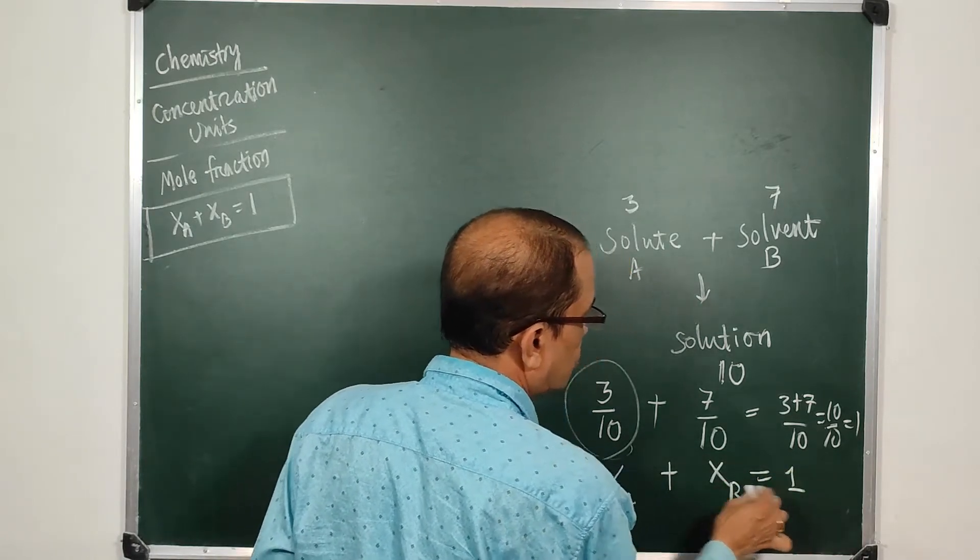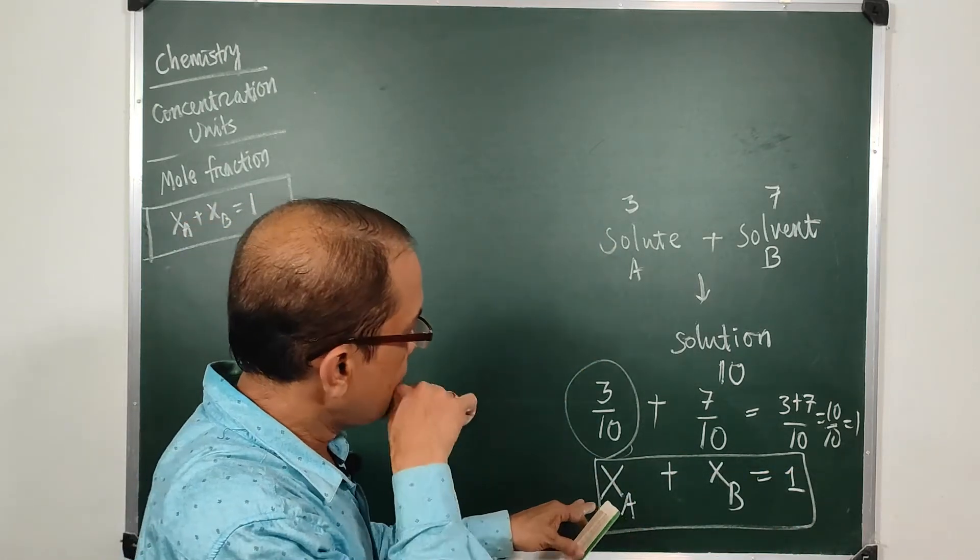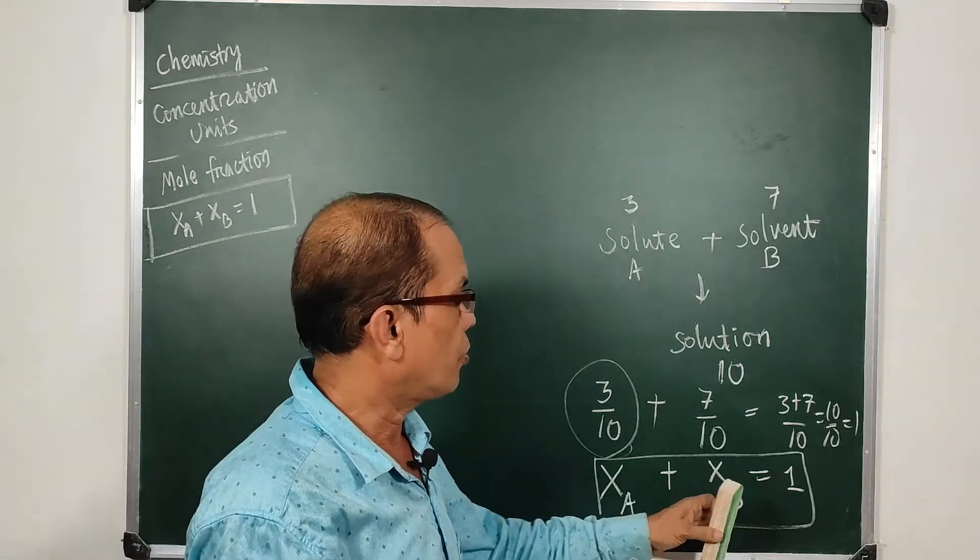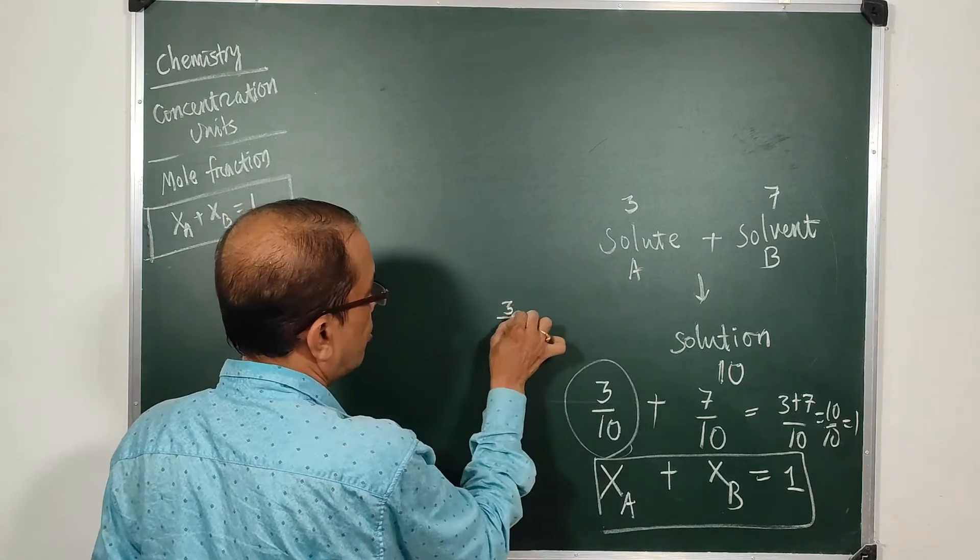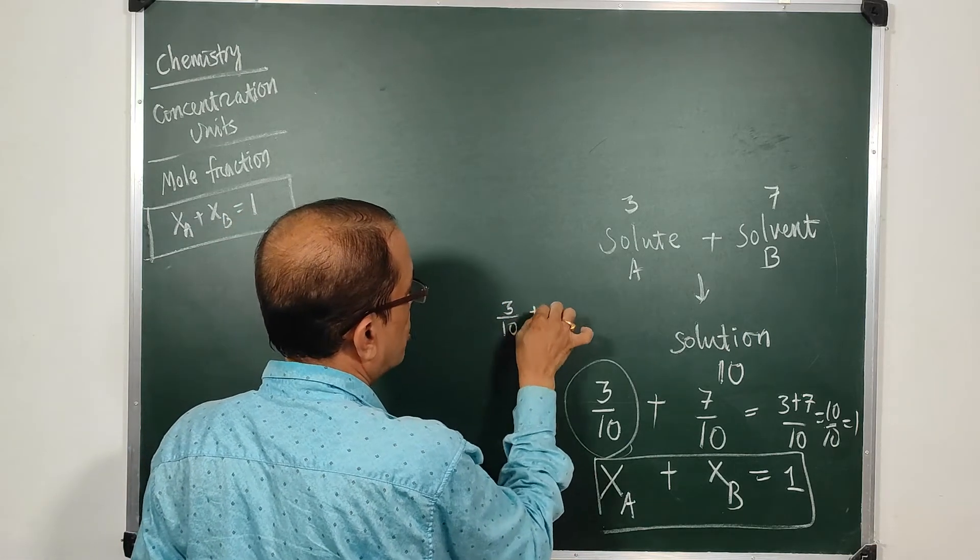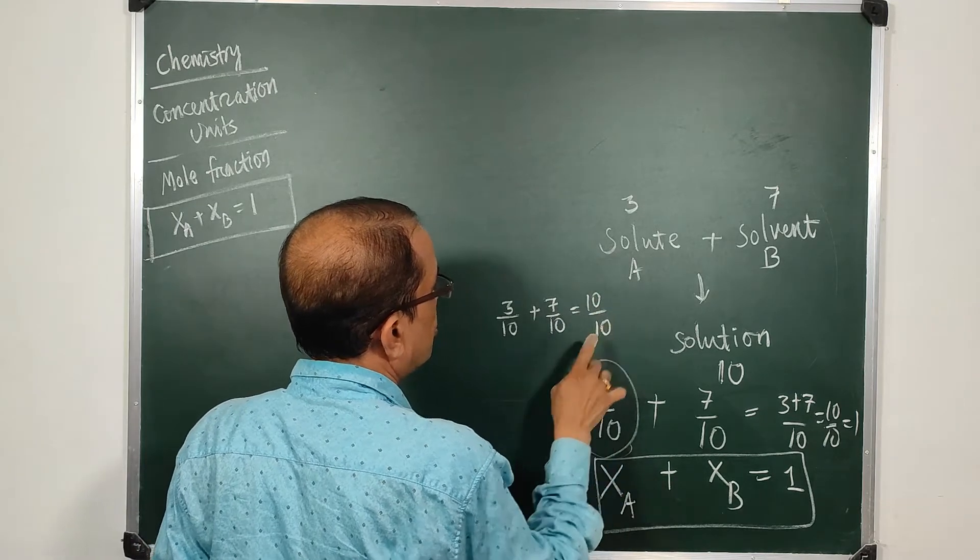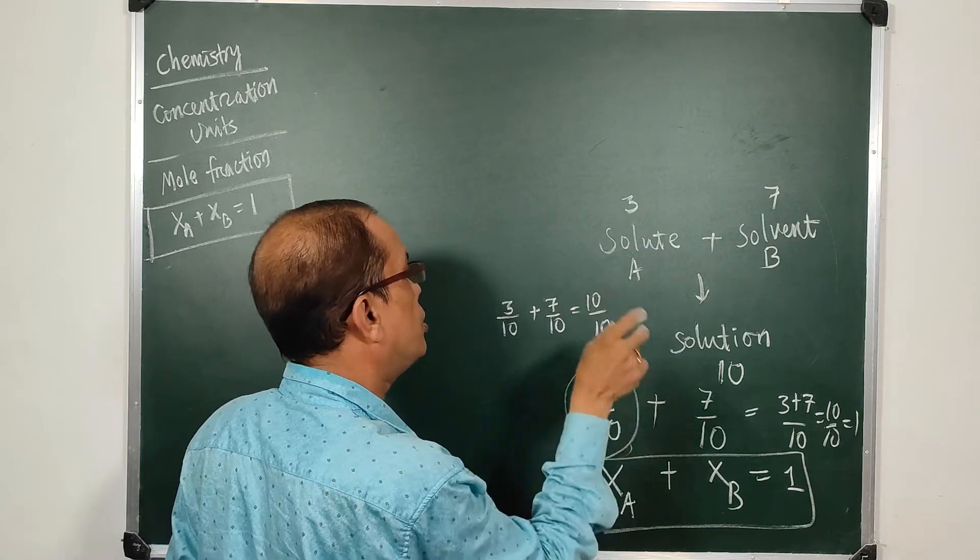So there is a general formula: mole fraction of solute plus mole fraction of solvent is one. Why? Because we have 3 upon 10 plus 7 upon 10 is 10 upon 10.